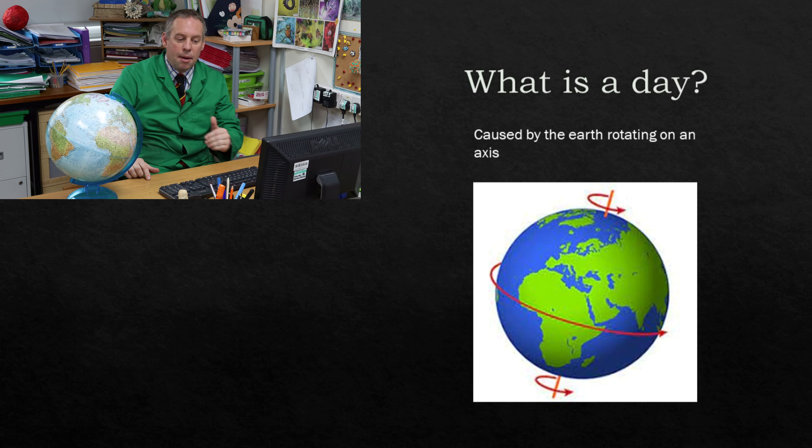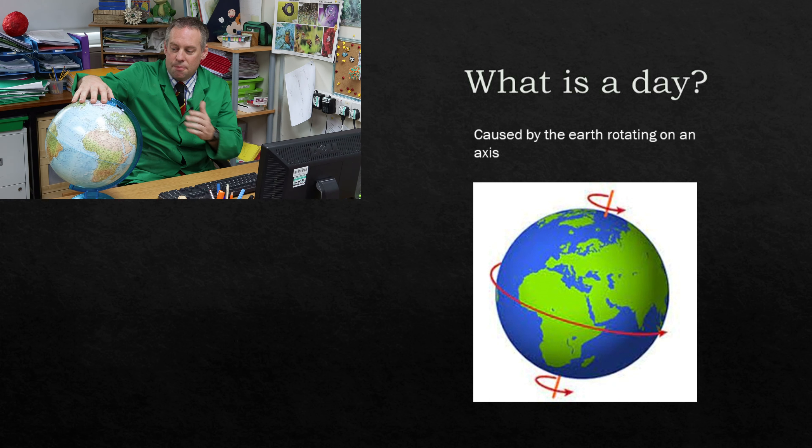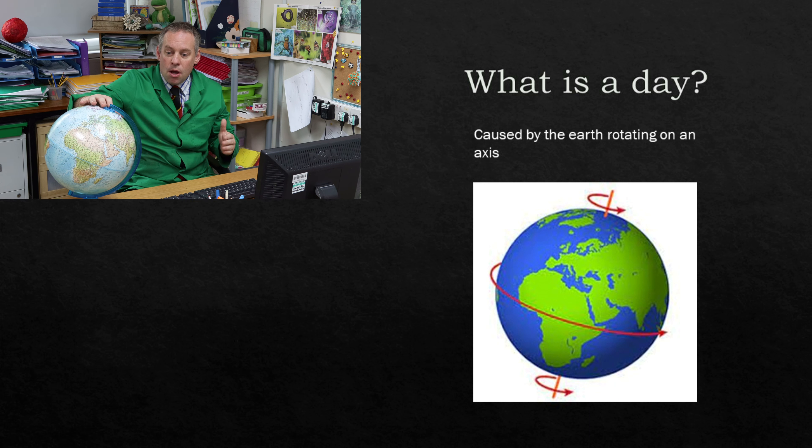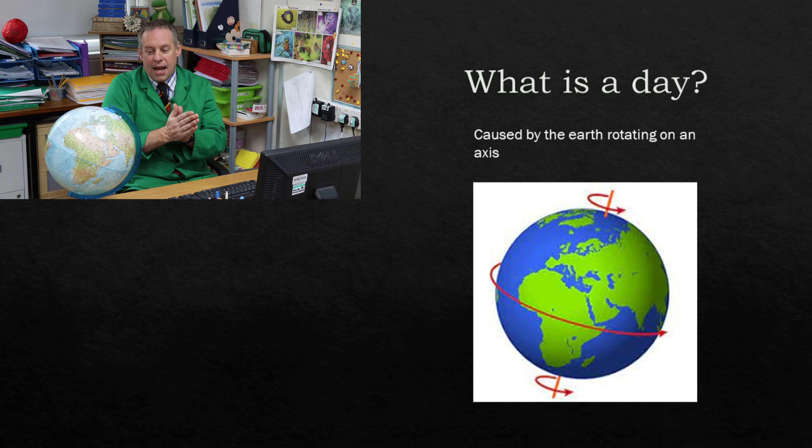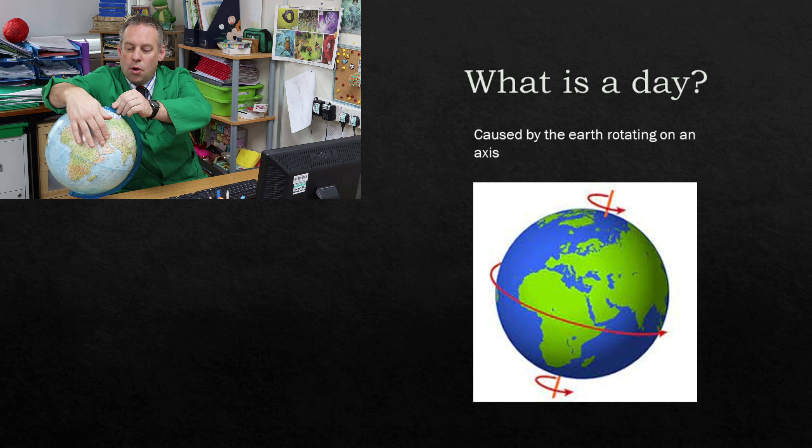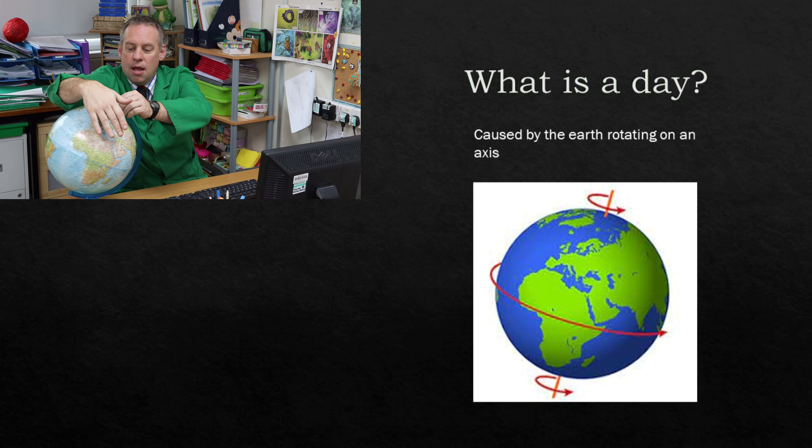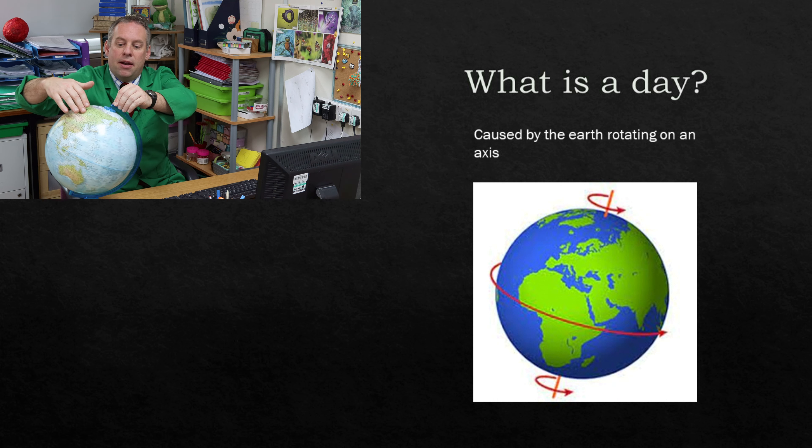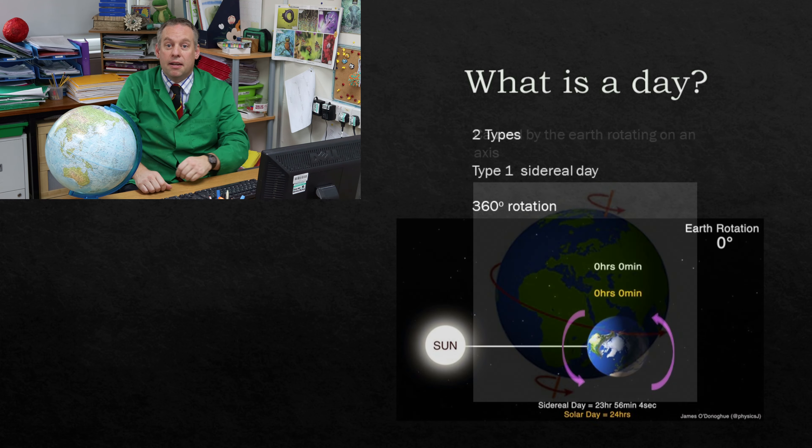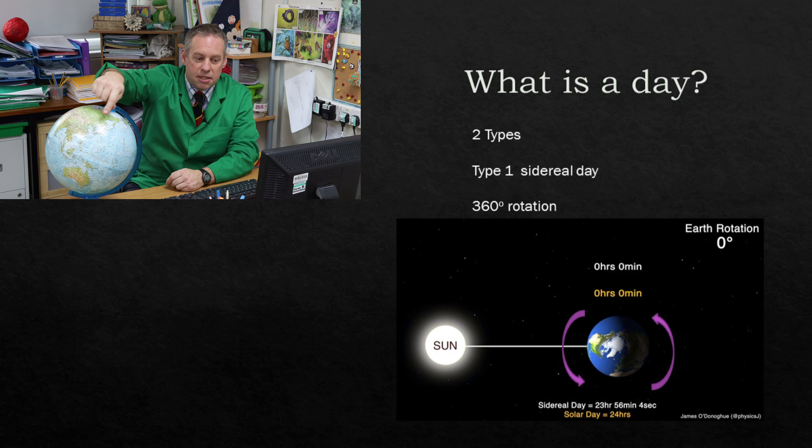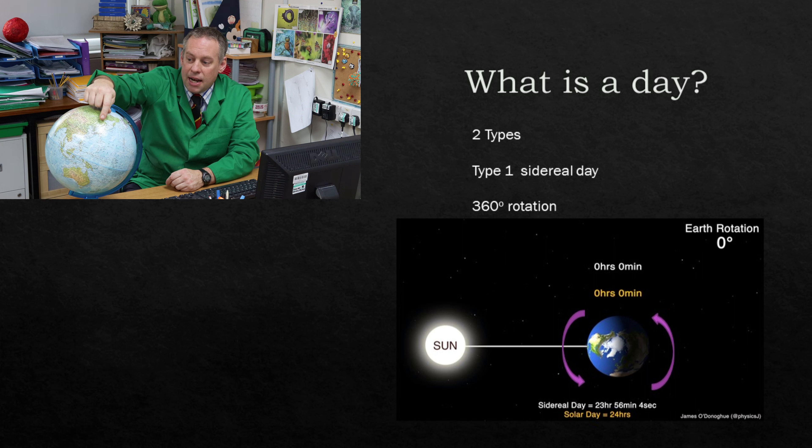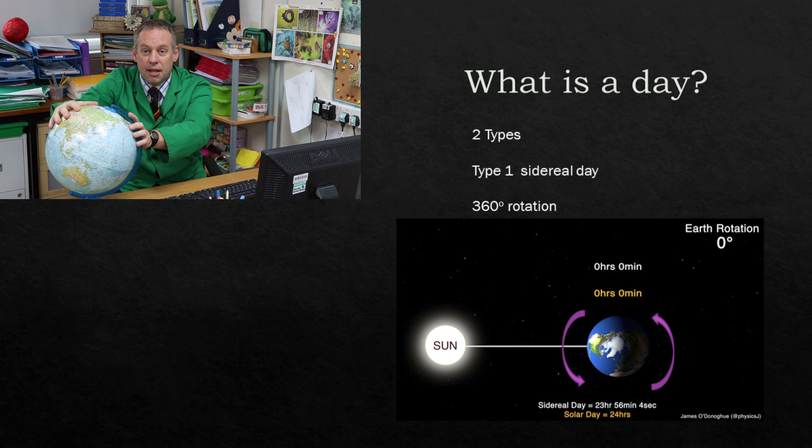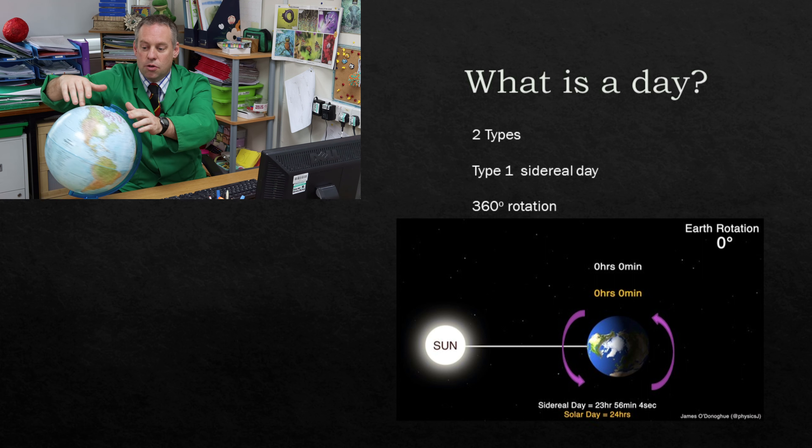And there is an interesting couple of things to go with how this rotation happens. First of all people think that a 360 degree rotation, that is a rotation going all the way round, takes 24 hours and this is in fact not true. The earth actually spins around like this and it takes 23 hours 56 minutes and four seconds to do one full 360 degree rotation. Now that has a name. We call that a sidereal day. A sidereal day is a full 360 degree rotation.